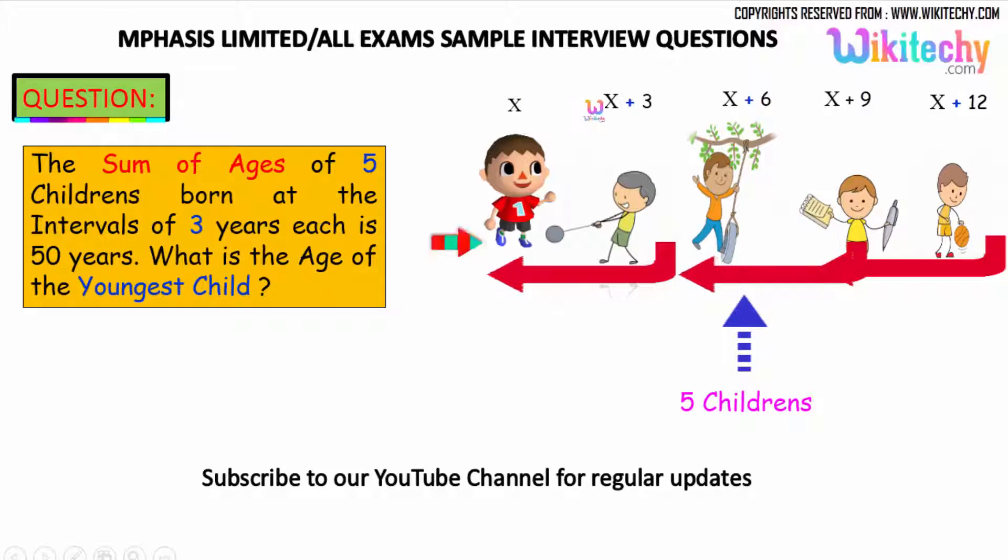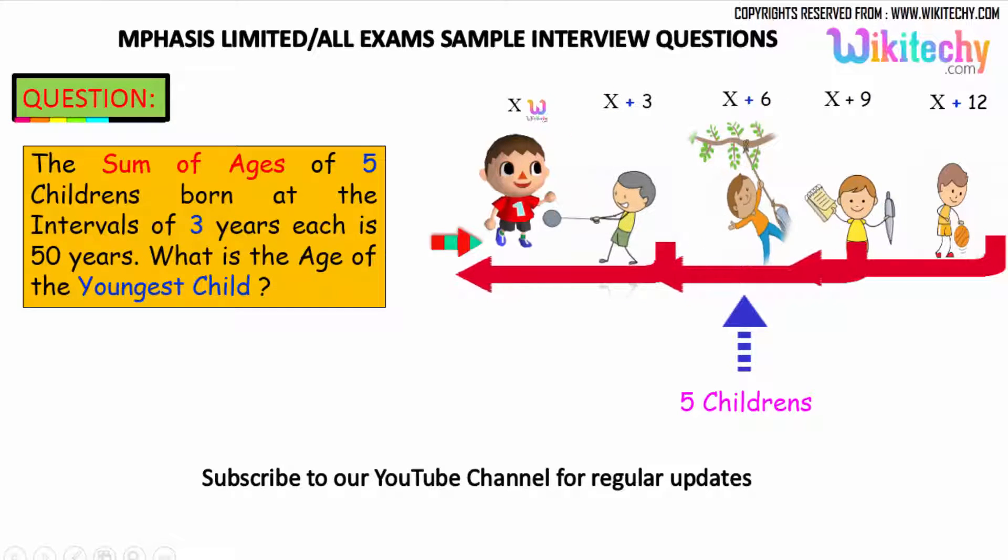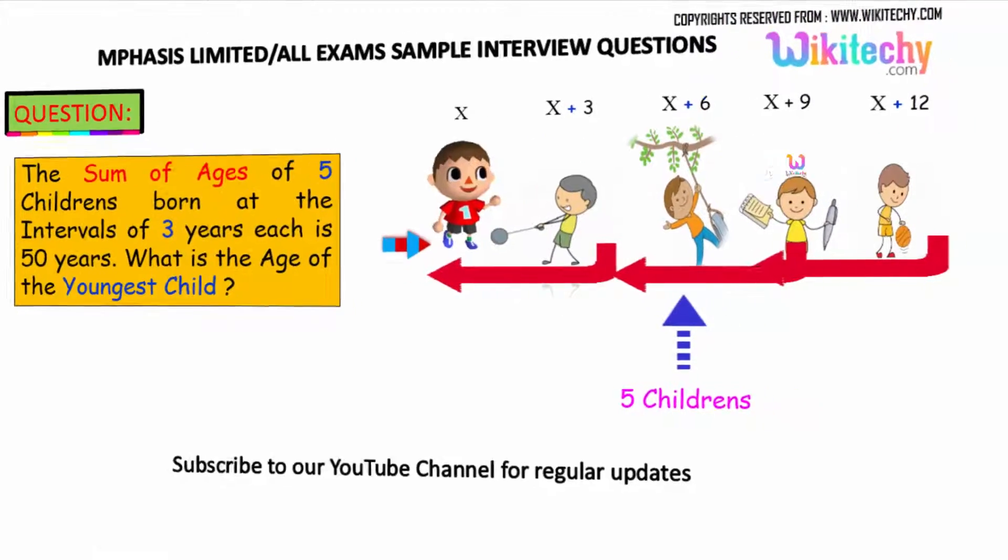So adding this one, x, x plus 3 and everything, you got 1, 2, 3, 4, 5, 5x plus a number. Let's see, is equal to 50.